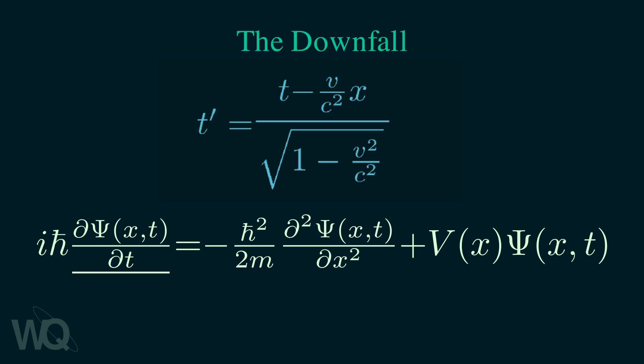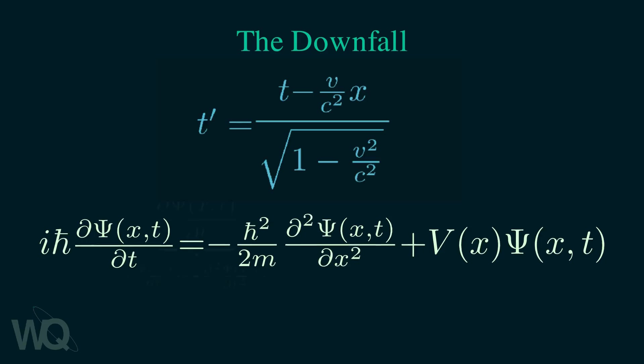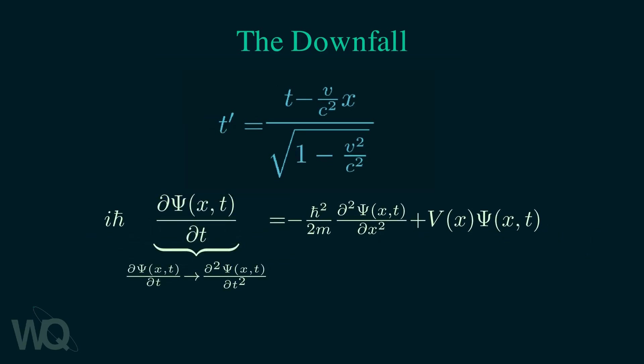The time derivative is of first order, but the spatial derivatives are of second order. So to make the Schrödinger equation consistent with special relativity, we have two choices. Either we make the time derivative appear in second order, and such an equation exists, and it is known as the Klein-Gordon equation. It describes spin-zero bosons.